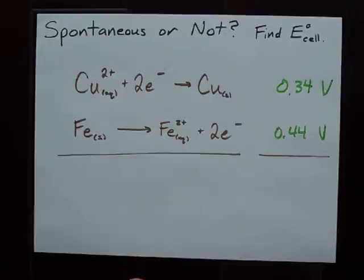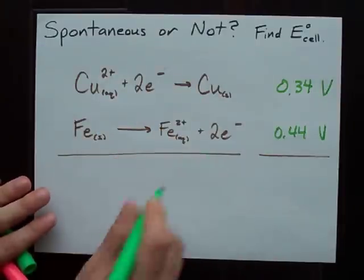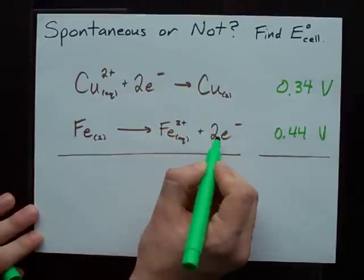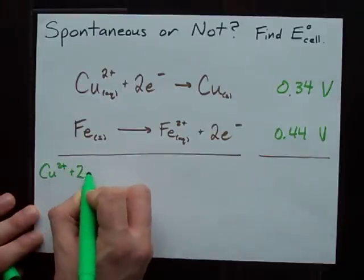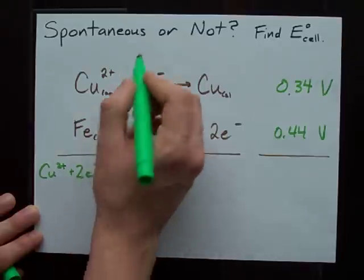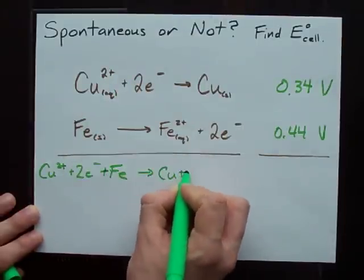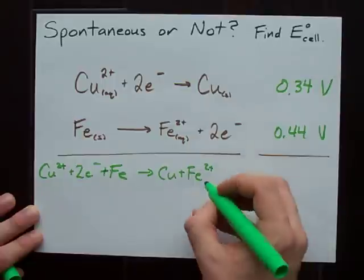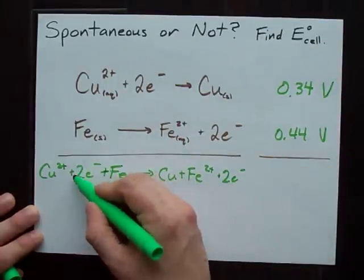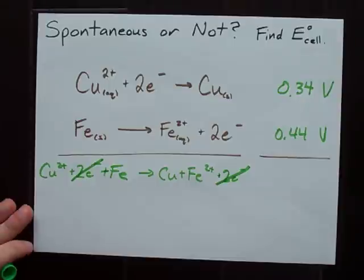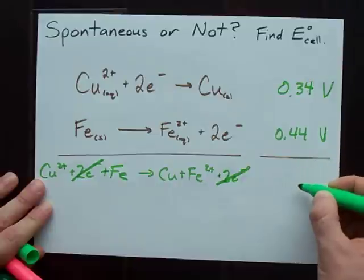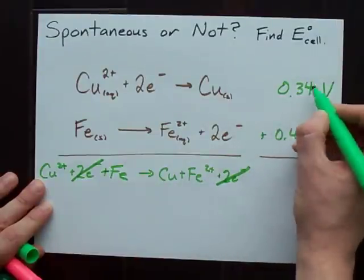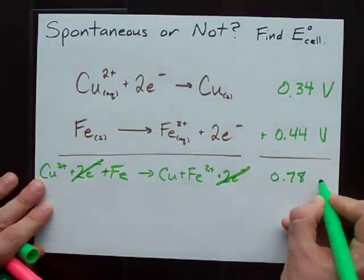What's important to note here is that when I add these two reactions together, I have two electrons on the left and two electrons on the right. They cancel each other out. And I'm left with the overall reaction for the cell. E cell is what I get when I add these together: 0.34 plus 0.44 is 0.78 volts.